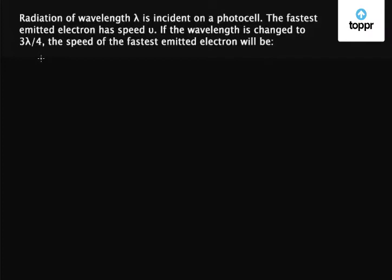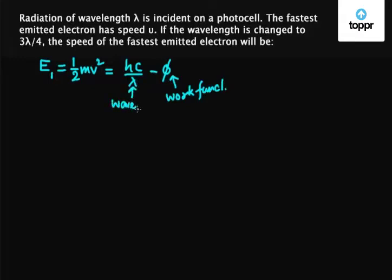Let's say E₁ is the energy of the electron when the speed was v. So we have E₁ equals 1/2 mv² equals hc/λ minus φ, where φ is the work function, λ is the wavelength, and E is the energy.